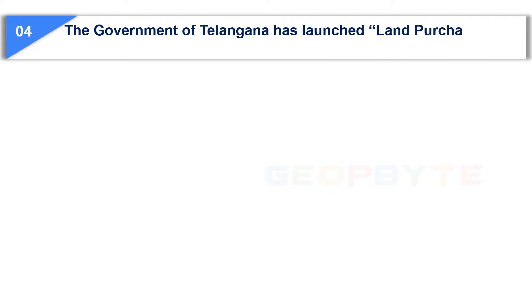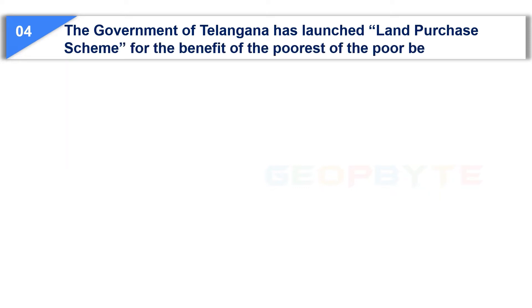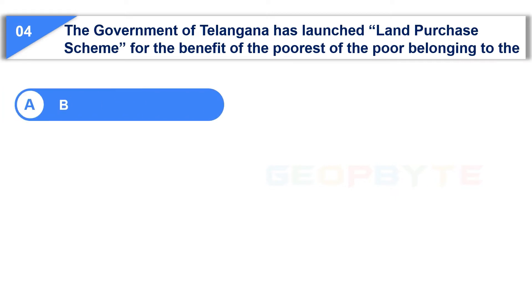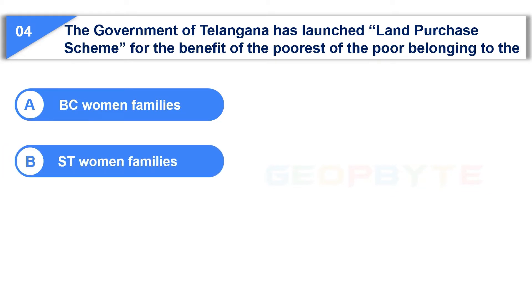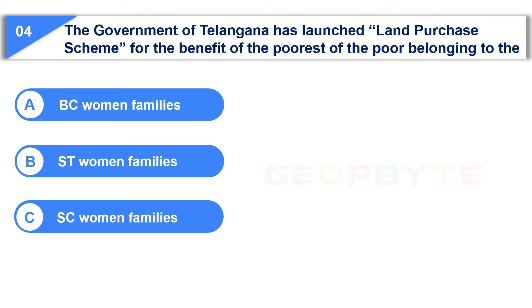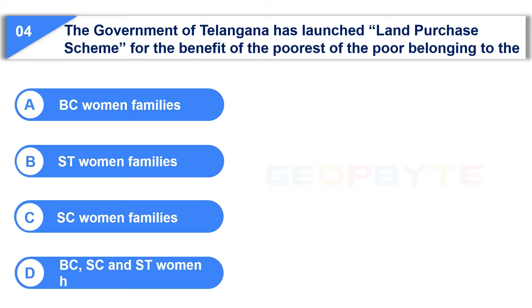The fourth question is: The government of Telangana has launched a land purchase scheme for the benefit of the poorest of the poor belonging to — Option A: SC Women Families. Option B: SC Women Families. Option C: SC Women Families. Option D: BC, SC, and SC Women Families.